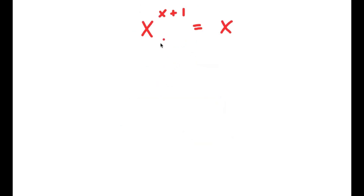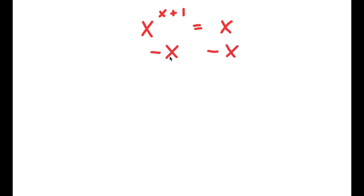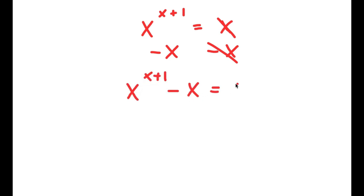In this problem, I have x to the power of x plus 1 is equal to x. To solve this, I'm going to start by subtracting x on both sides. These two cancel out, and I'm left with x to the power of x plus 1 minus x is equal to 0.